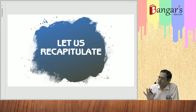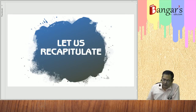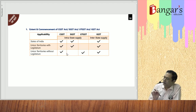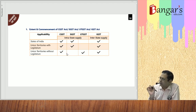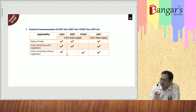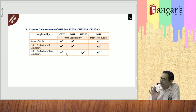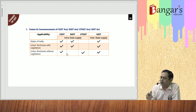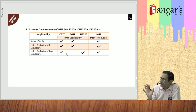Whatever we have discussed in this chapter of GST, we will revise the same. First of all, we discussed the enactments: Central Goods and Services Tax Act and Integrated Goods and Services Tax Act. There are 29 states and two union territories with legislature — Delhi and Puducherry — for which SGST Act applies. For union territories without legislature, there is a single enactment: UTGST Act.